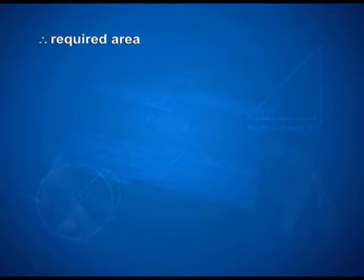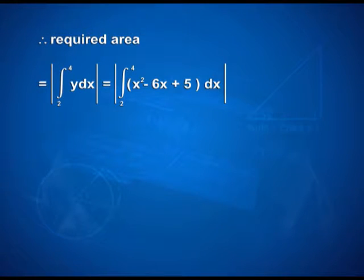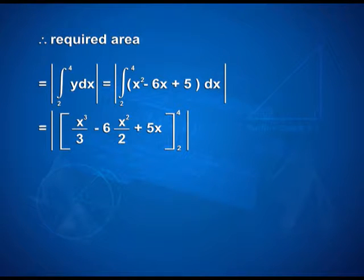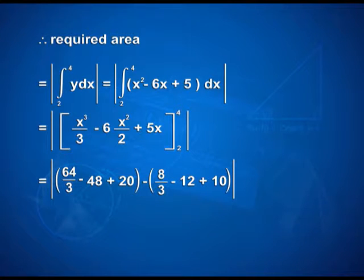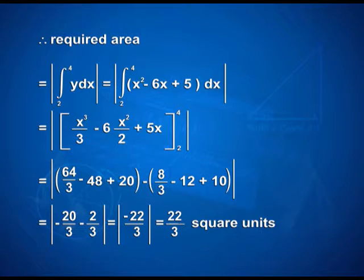Therefore, required area is equal to the modulus of integral from 2 to 4 of y dx, which equals the modulus of integral from 2 to 4 of (x squared minus 6x plus 5) dx. That gives the modulus of [x cubed upon 3 minus 3x squared plus 5x] with limits 2 and 4, which equals the modulus of (64/3 minus 48 plus 20 minus 8/3 minus 12 plus 10), that is the modulus of (-20/3 minus 2/3), giving -22/3, so the absolute value is 22/3 square units.